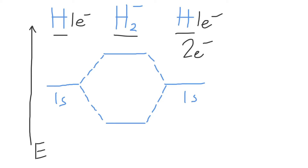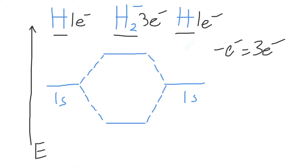That would make two for H2 in general; however, this is H2 minus, so we need to add one more. Two electrons plus one more electron makes three electrons. H2 minus has a total of three valence electrons to fill into our diagram, following the Aufbau principle, the Pauli exclusion principle, and Hund's rule.